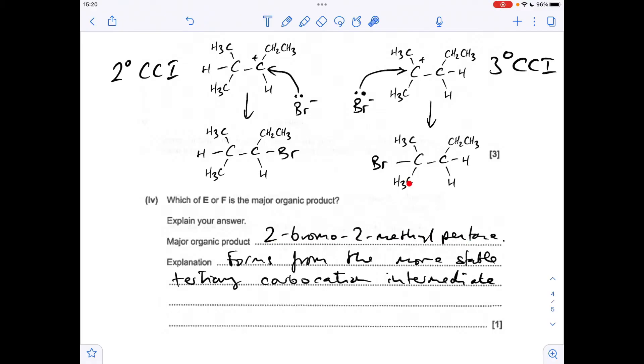So in terms of name, we've got 2-bromo-2-methylpentane. I'll just quickly explain that. So the longest continuous carbon chain is 5 long. 1, 2, 3, 4, 5. Carbon number 2, we've got a bromine and a methyl. And B comes before M in the alphabet, so that's why we put them in that order.